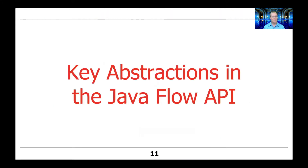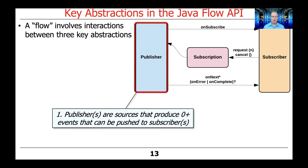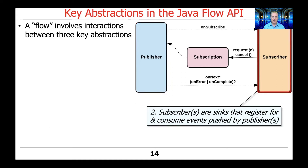Let's talk about some of the key abstractions in the Java Flow API. A flow involves interactions between three key abstractions or three key components: publishers, subscribers, and subscriptions. Publishers are sources that can produce zero or more events that can then be pushed to zero or more subscribers. Subscribers are syncs or receivers that register for and consume events that are published by the publishers.